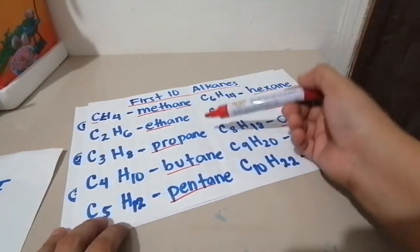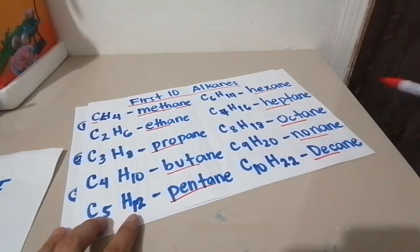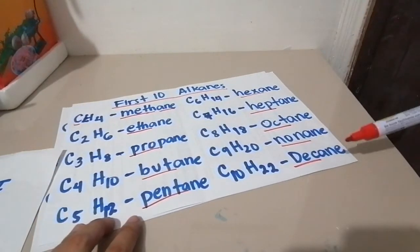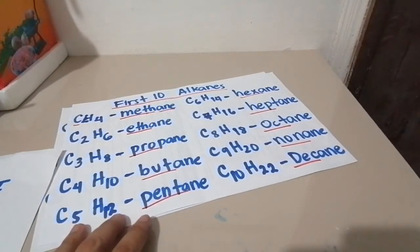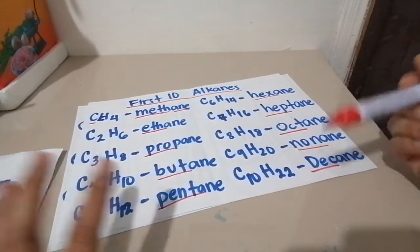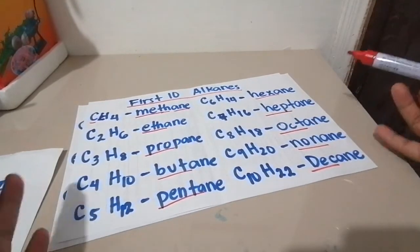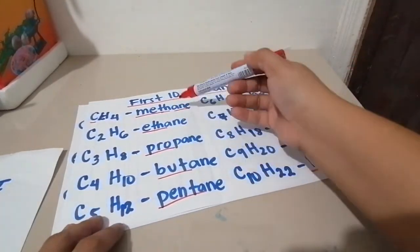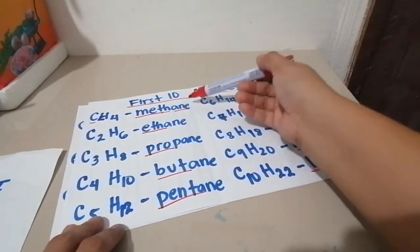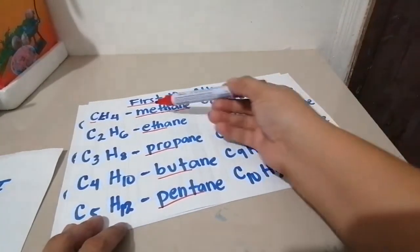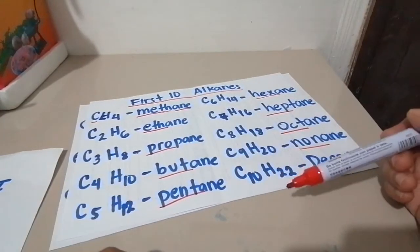This is methane, ethane, propane, butane, pentane, hexane, heptane, octane, nonane, and decane. When they're alkenes or alkynes, we just change this -ane into -ene or -yne. But the meth, eth, prop remain the same.